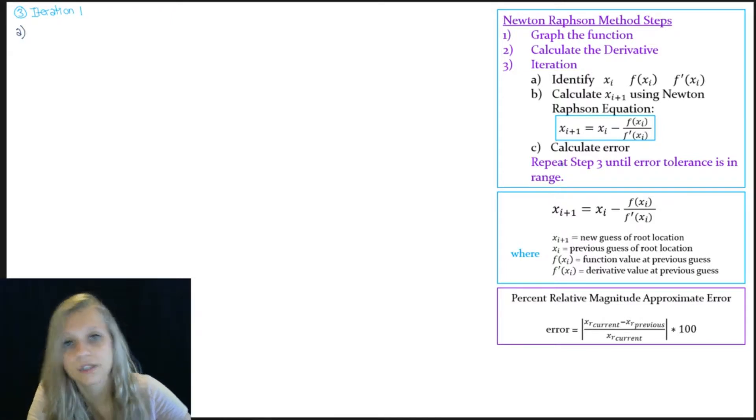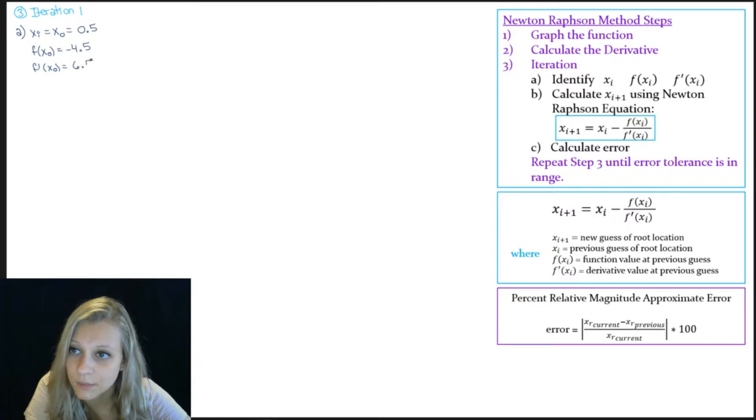So step a is to identify my x of i and the function value and derivative value at this location. So in this case, my x of i I'm going to denote as x of 0, and that's just going to be my given bound. And I'm going to take that value and substitute it into my function and my derivative. I'm going to get negative 4.5 and 6.5.